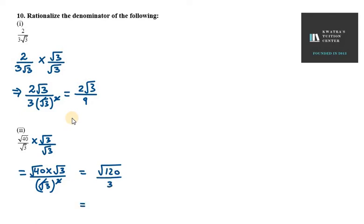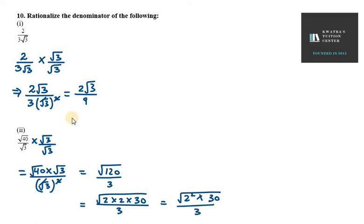Now, how can we define under root 120? As 2 into 2 into 30 over 3. So this is 2 squared and this is 30 under root over 3. Square and under root cancel. So we will get 2 under root 30 over 3. This is your answer for the second part.